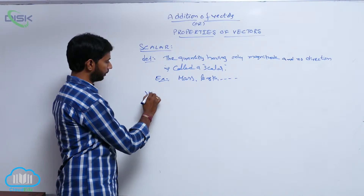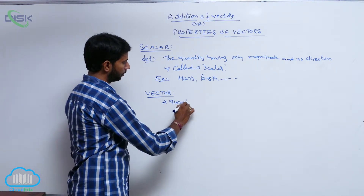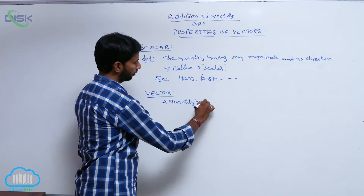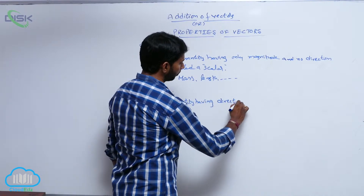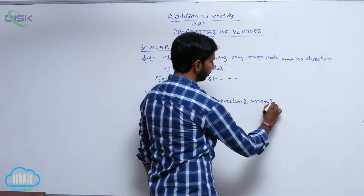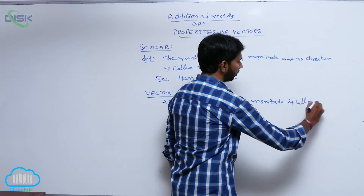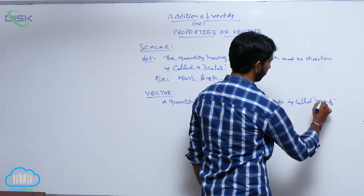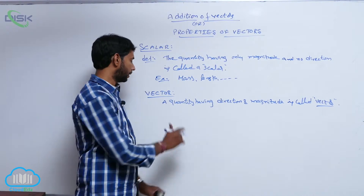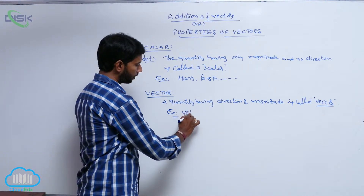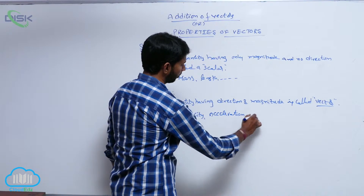Next, what is meant by a vector? A vector is a quantity having both magnitude and direction. For example, velocity, acceleration, and so on.